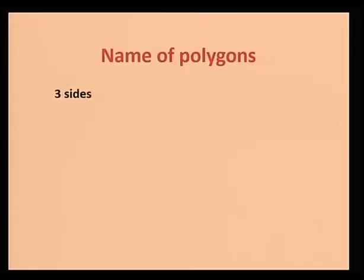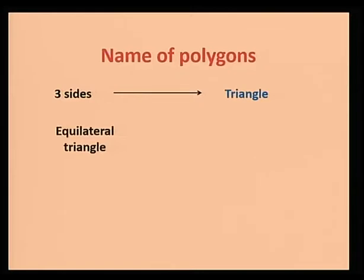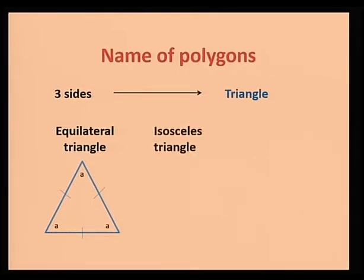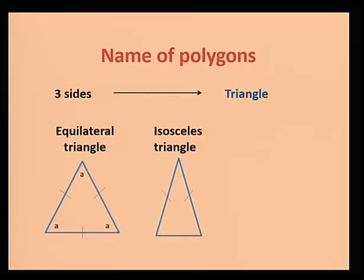A polygon with three sides is called a triangle. However, we have different types of triangles, namely, equilateral triangle. An equilateral triangle consists of three equal sides and three equal angles. We also have an isosceles triangle. An isosceles triangle consists of two equal sides and two equal angles. Now, you must know, among the three angles, what are the two equal angles.